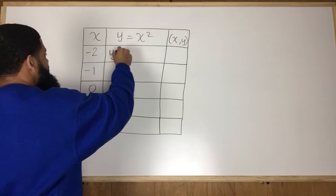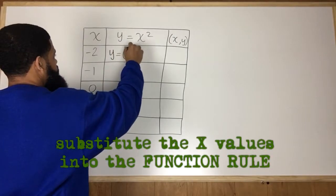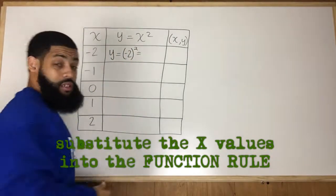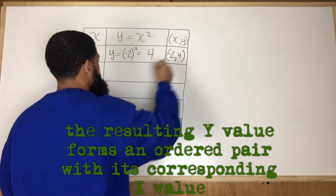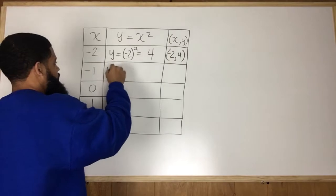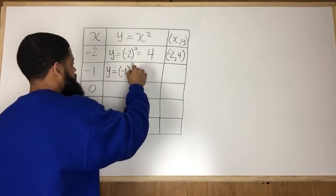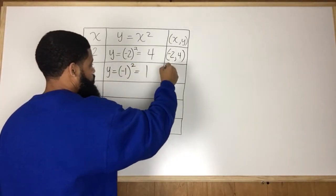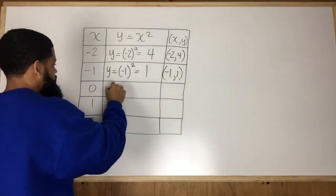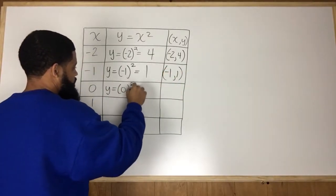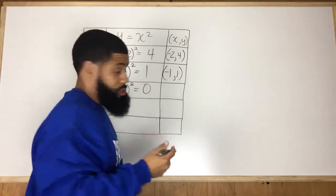So y equals negative 2 to the second power. Negative 2 to the second power is 4. So I get negative 2, 4. y equals negative 1 to the second power, which equals 1. So I have negative 1 and positive 1. y equals 0 to the second power, which is simply 0.